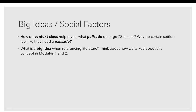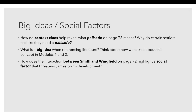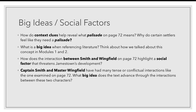Just as we've talked about metaphor, we've also talked about big ideas or themes — a main idea that comes up multiple times throughout a text. Thinking about social factors, or issues that create conflict within a community: how does the interaction between Smith and Wingfield, this conversation about the palisade, highlight a social factor that threatens the development of Jamestown? They have fought and fought. Captain Smith is not on the officers' committee, and Master Wingfield is the president of the colony. They disagree about this fundamental thing that could help protect the colony. How two people who don't trust or respect each other have to make decisions that affect other people's lives — could this be a recurring theme throughout the text?